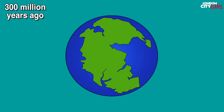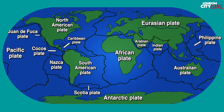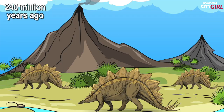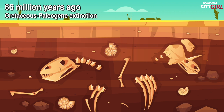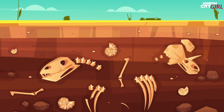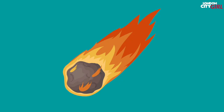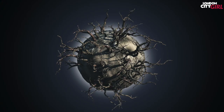About 300 million years ago the Earth had one massive super continent called Pangea. Plate tectonics explains how giant areas of the Earth's crust called plates move around the surface of the Earth. These movements caused super continents to form and break up every 300 to 400 million years. About 240 million years ago the first dinosaurs evolved. These dinosaurs ruled the Earth until a mass extinction event occurred approximately 66 million years ago.